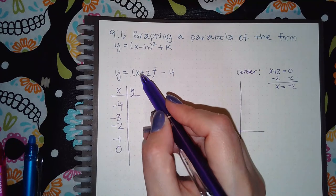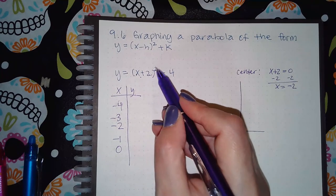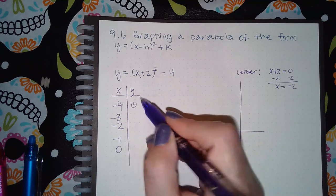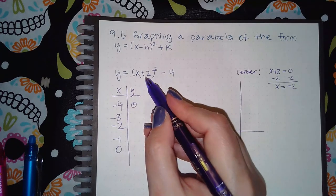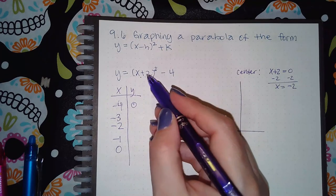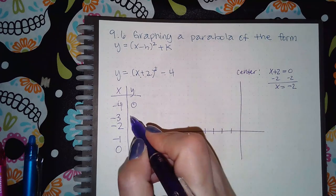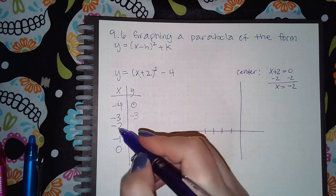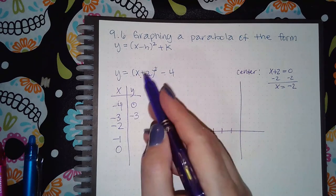When I plug in negative 4, I'm going to get negative 2 squared is 4, 4 minus 4 is 0. When I plug in negative 3, I get negative 1 squared which is 1 minus 4 is negative 3. Negative 2 plus 2 is 0, 0 squared is 0 minus 4 is negative 4.